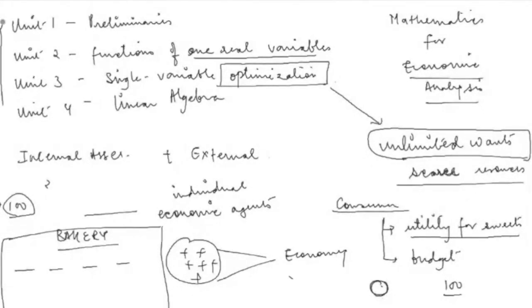So these are the four units that you have for this semester: preliminaries, basic things about mathematics, so that you are able to understand the following three units; unit two, functions of one real variable; unit three, single variable optimization; and the last is linear algebra.